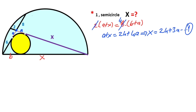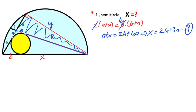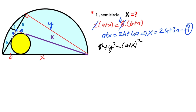If you connect these two corners, the angle here must equal 90 degrees because it is opposite the diameter. I'll represent this side with y. For this triangle, applying the Pythagorean theorem: 8 squared plus y squared equals (a plus x) whole squared. Therefore, y squared equals (a plus x) squared minus 64. This is the second equation.